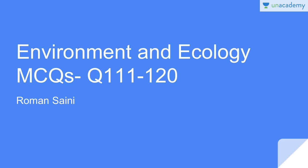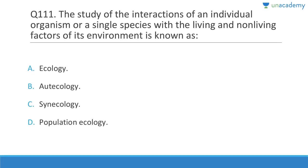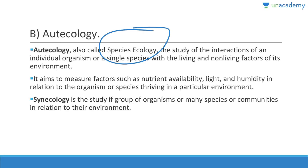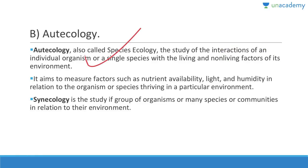Questions 111 to 120. Question 111: The study of the interaction of an individual organism or a single species with living and non-living factors of its environment is called autecology (species ecology). Auto means single species; syn means many species. Autecology measures factors such as nutrient availability, fire, light, and humidity in relation to a single organism or species in a particular environment.